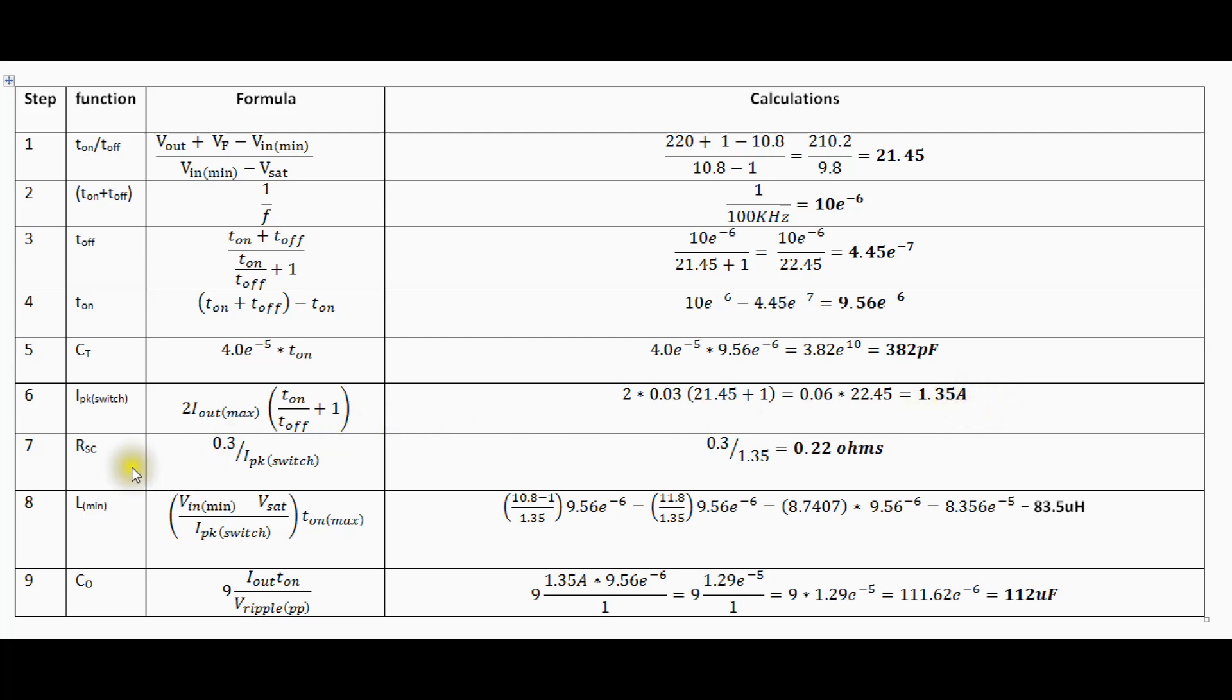the second one now is the resistor shunt and that's come out at 0.225, 0.22 ohms.